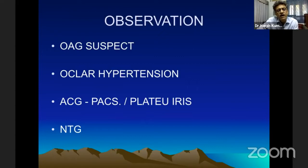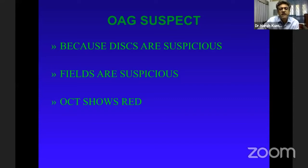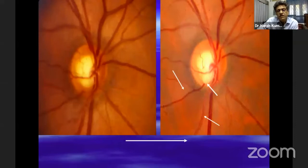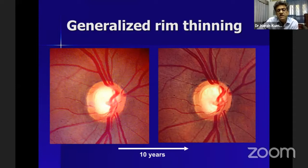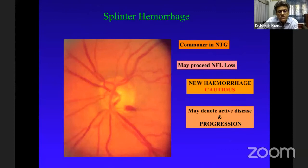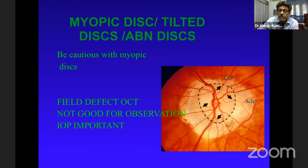Observation would be appropriate in OAG suspect, ocular hypertension, ACG groups, and the NTG group. For OAG suspects, the disc may be suspicious, fields are suspicious, and OCT has already been covered. Always remember that in these cases structural damage is likely to be the earliest change, though this is not always the rule. Over the years you must take a clear view — there may be generalized rim thinning or small changes which you may not be able to pick up very clearly. But once you have a disc hemorrhage, you know things are not going the right way. If you have a bad disc due to myopia, morning glory, or similar conditions, you will have a bad field and bad OCT, making it very tough to observe and follow up.